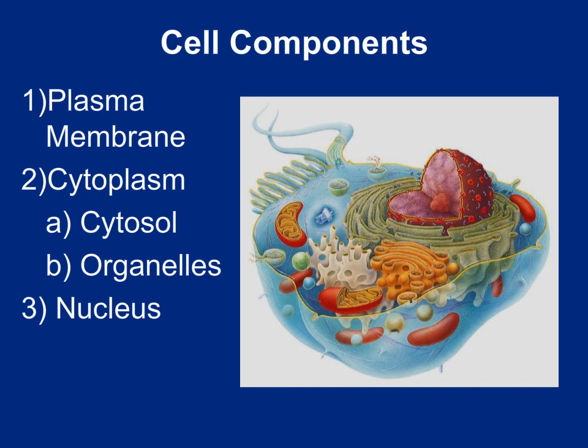Any animal cell can be divided into three very large parts: the plasma membrane, which encircles the outside of the cell; the cytoplasm, which is everything inside the cell with the exception of the nucleus — this includes the cytosol, or cellular jelly, as well as the organelles such as the mitochondrion, endoplasmic reticulum, and Golgi apparatus; and finally, in the center of most cells, we find a nucleus.